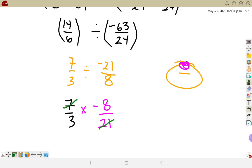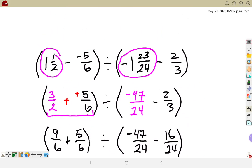So cross-reducing. 7 and 21 have a common factor of 7. So that becomes a 1, and this one here becomes a 3. And as I multiply those two guys, that gives me negative 8 over 9.